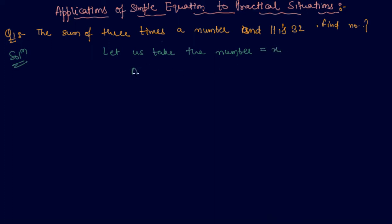According to the statement, three times a number, I have written here three times a number plus 11. The sum of three times a number and 11 is 32. Now we have to find out the number which is x. So what I will do: 3x plus 11 is 32.